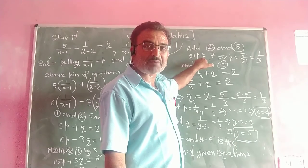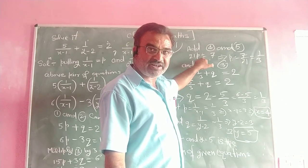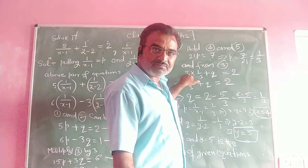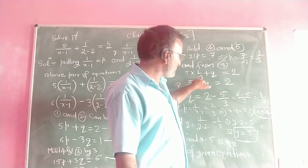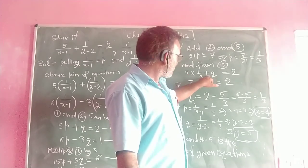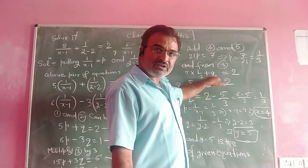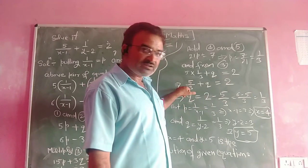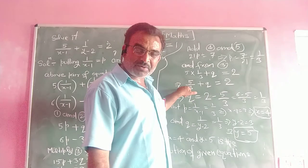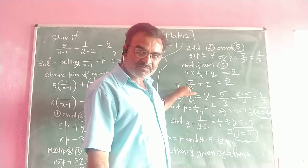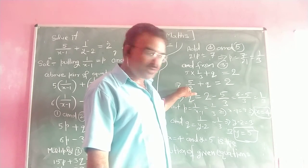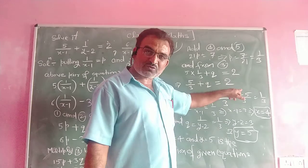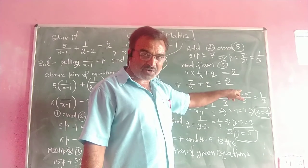Substituting p equal to 1 upon 3 in equation 3: we have 5 multiplied by 1 upon 3 plus q is equal to 2. Simplifying this, we find that q is also equal to 1 upon 3.